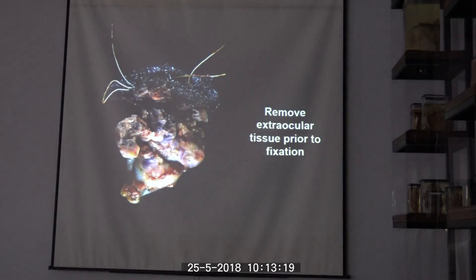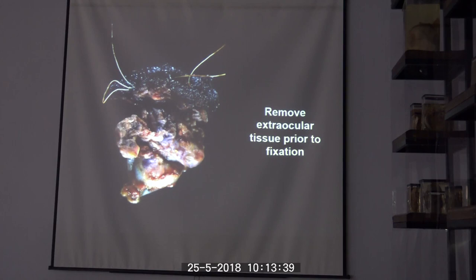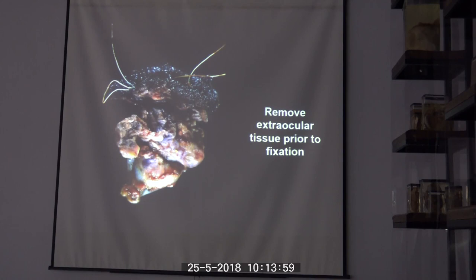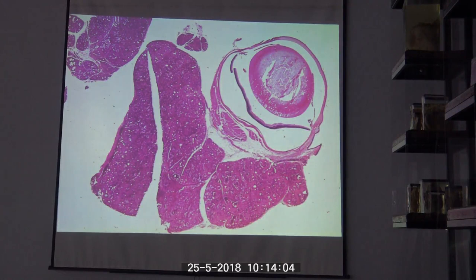Either we have a sample collected on the necropsy floor or from a live animal. This enucleation specimen has sutures keeping the eyelids closed. Unfortunately, that is often the way samples are submitted. The best approach would be, after collecting the sample, to remove all extraocular tissues. The more tissue you leave with the globe, the more likely you are to get artifacts like retinal detachment.